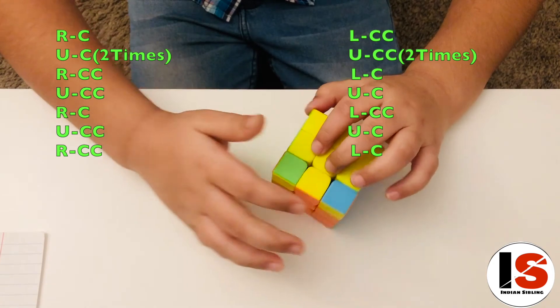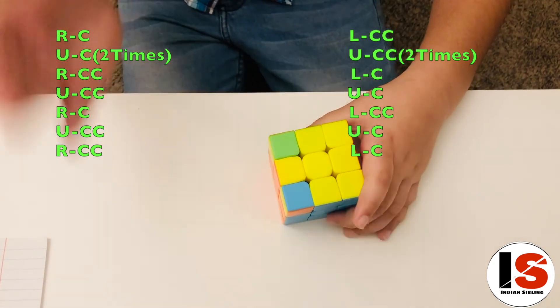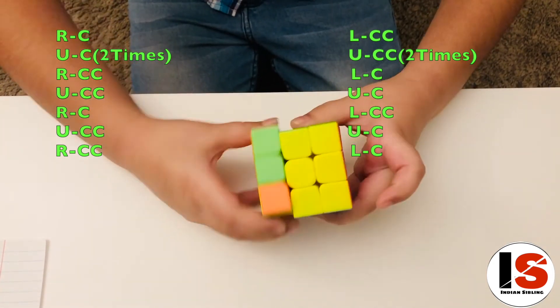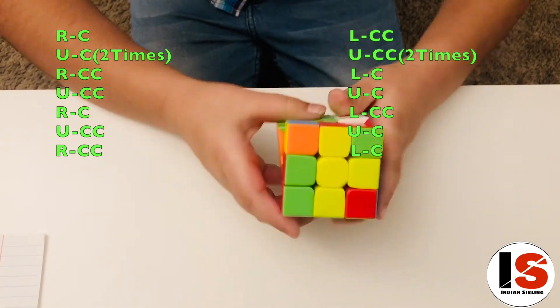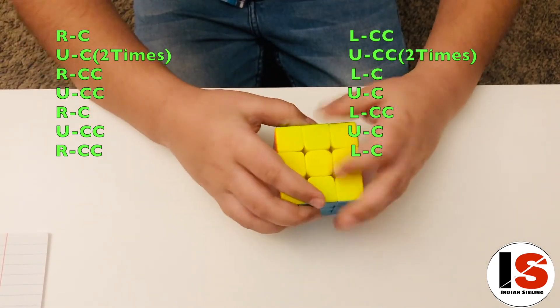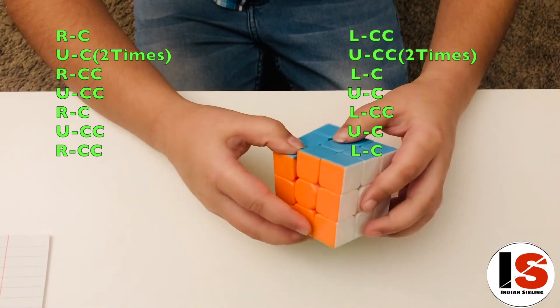Now we have to put this way. We can put it on the right and do the algorithm once again. And our Rubik's cube is now solved.